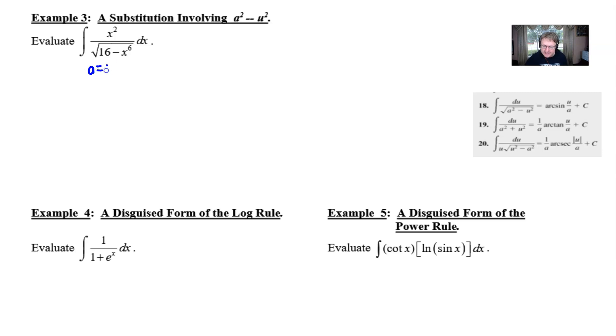Seeing that that is the case, the a would be 4 and the u would be x cubed. Remember, you would let the a-squared be 16 and the u-squared would be the x to the 6th that you see there.